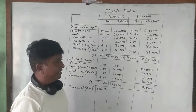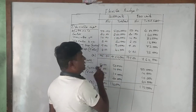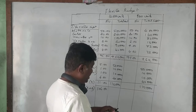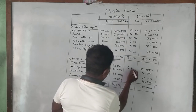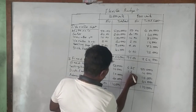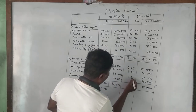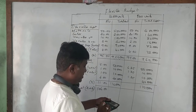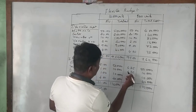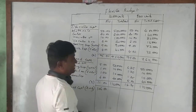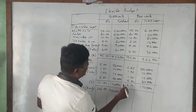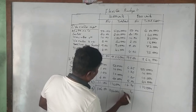For per unit fixed cost at 8,000 units: 50,000 ÷ 8,000 = 6 rupees 25; 10,000 ÷ 8,000 = 1 rupee 25; distribution fixed 1 rupee 25; admin 40,000 ÷ 8,000 = 5 rupees. Total fixed cost per unit = 13 rupees 75. So total cost = 9,50,000 + 1,10,000 = 10,60,000 for 10,000 units, and 7,60,000 + 1,10,000 = 8,70,000 for 8,000 units.